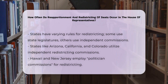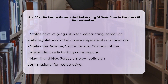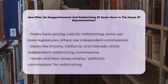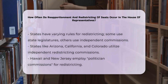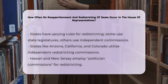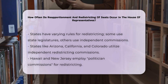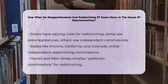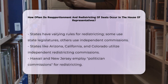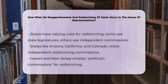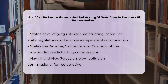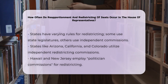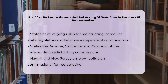Some states use their state legislatures to draw new districts, while others use independent redistricting commissions, or a combination of both. For example, Arizona, California, and Colorado use independent commissions, while Hawaii and New Jersey use politician commissions.